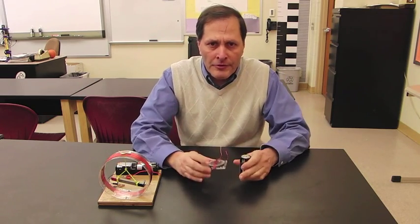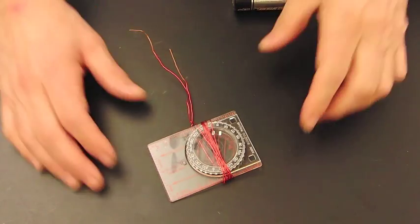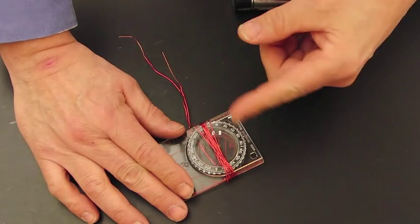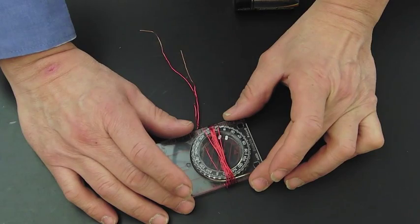So first thing is we want to take a look and see how this is built. So here is our first model of the tangent galvanometer. We have a compass, we have the wire wrapped around it, and I've positioned the needle so that it's directly underneath those wires.